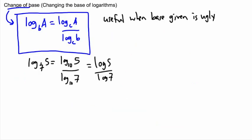The change of base rule tells you that if you have an ugly base, something that's not 10, and you want to do log base 7 of 5, that's the same thing as saying log base 10 of 5 over log base 10 of 7.